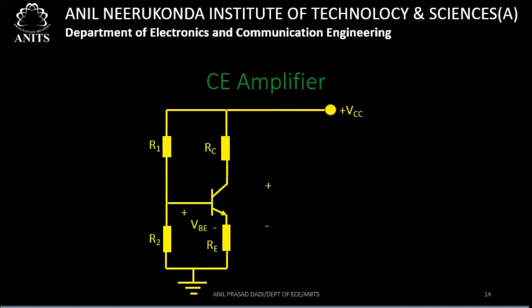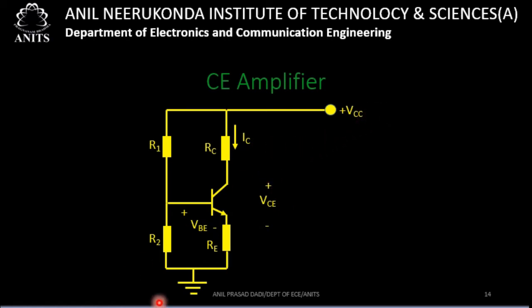This shows VBE being applied, VCE, and IC. The operating point means (VCE, IC). This circuit is called a voltage divider bias circuit. Designing this circuit means finding the values of R1, R2, RC, and RE, given the transistor along with VCE, IC, and VCC. Finding the component values — R1, R2, RC, RE — is nothing but the design.